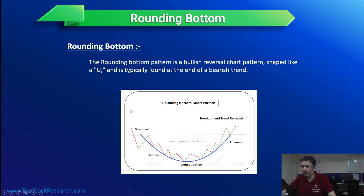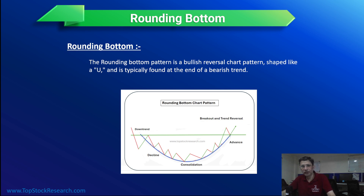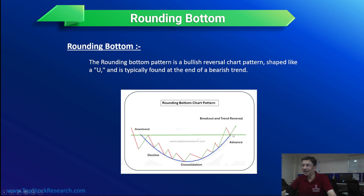Rounding bottom pattern is a bullish reversal. The best formation of this pattern is in a downtrend, where the stock gradually goes down without showing a lot of impulse in any direction — it doesn't give a big movement, it gradually goes down to a level, and from there it gradually goes up. Once it crosses that level, the rounding bottom is completed, and once this breakout is given, it goes up. From that perspective, it is a reversal pattern.